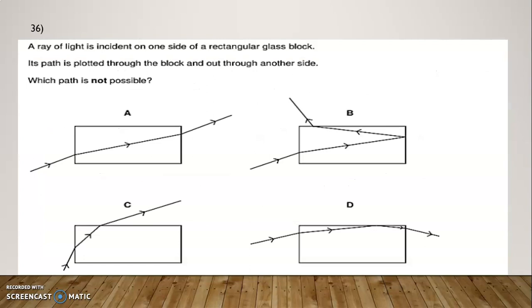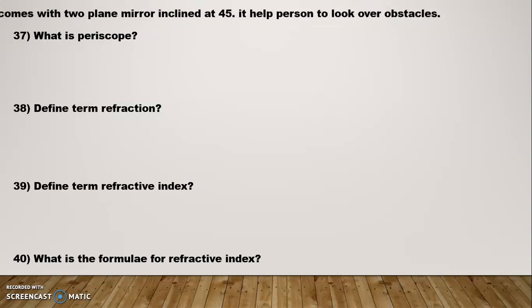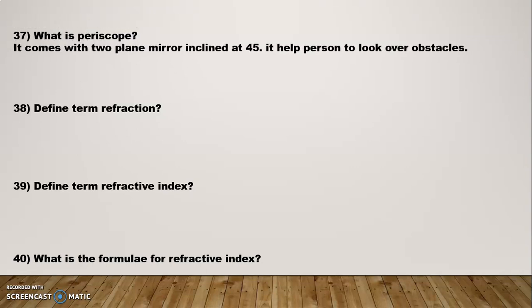Question Number 36: A ray of light is incident on one side of a rectangular glass block. Its path is plotted through the block and out through another side. Which path is not possible? The correct option is B. Next is the Periscope: it uses two plane mirrors inclined at a 45-degree angle. It helps a person to look over an obstacle. It is mainly used in submarines and by spectators watching a match in a ground.